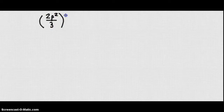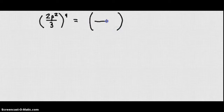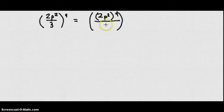Let's say I have the quantity two p squared over three, all to the fourth power. In this case, we take that fourth power and apply it to both the top and the bottom of the fraction. So we're going to have two p squared to the fourth power over three to the fourth power.